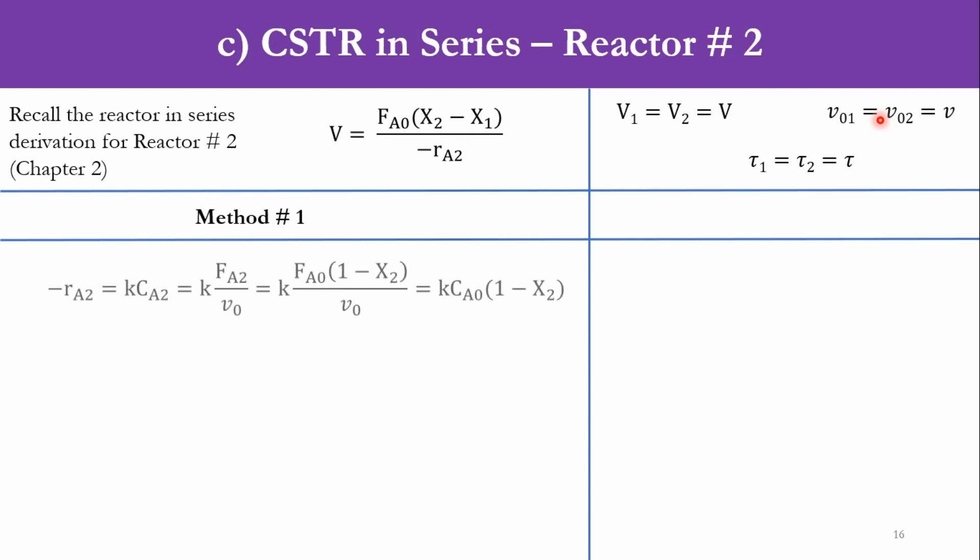So what we need to do, the first method is minus RA2 is equal to k CA2. Now that CA2 is equal to FA2 over V0, FA2 is FA0 into 1 minus X2, FA0 V0 goes to CA0. So actually that minus RA2 goes to k CA0 into 1 minus X2. For V is equal to this equation, FA0 X2 minus X1 over minus RA2. And that minus RA2 is replaced by k CA0 1 minus X2. So that CA0 is cancelled out with this CA0 and the equation becomes V0 into X2 minus X1 over k into 1 minus X2.